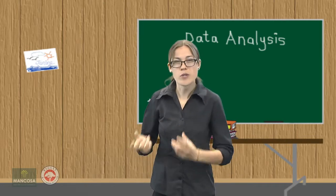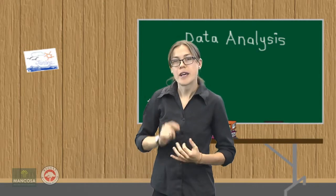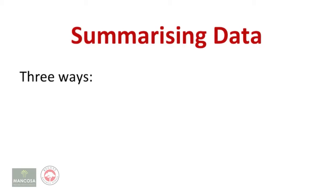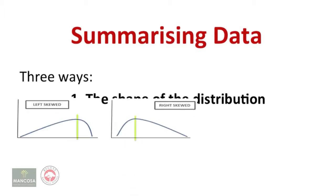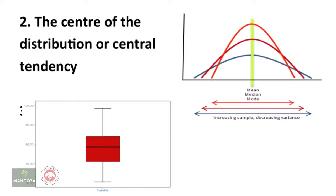So let's start with some useful data summary techniques. Basically, data can be summarized by looking at three things. The first is the shape of the distribution. The second is the center of the distribution or otherwise known as the central tendency. And then the third manner is by looking at the spread of data.